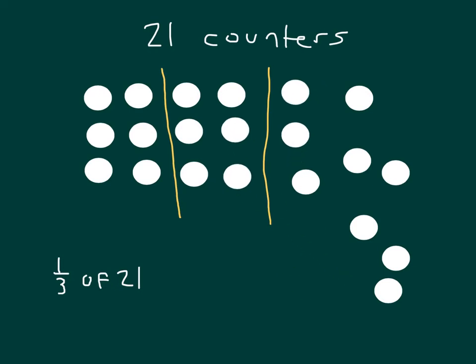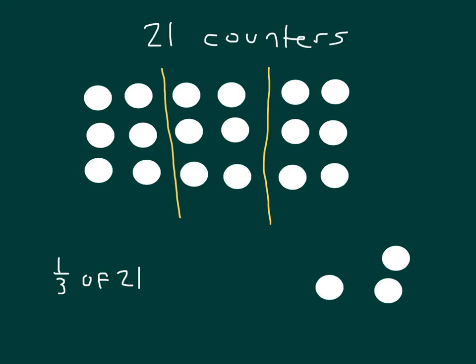I still have some more counters here. Looks like this third area, for this third thirds, I also have 6, but I still have 3 more counters. So it looks like it should have 7 within each of those areas and within each of those thirds.